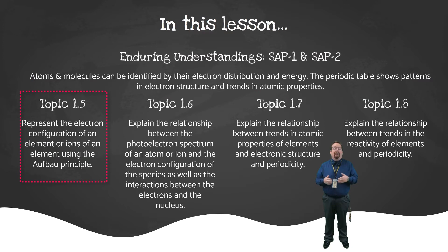Topics 1.5 through 1.8 ask you to represent the electron configuration of atoms or ions using the Aufbau Principle, explain the relationship between the photoelectron spectrum and electron configuration, explain the relationship between trends in atomic properties and electronic structure in periodicity, and explain the relationship between trends in reactivity of elements and periodicity. Let's get started.